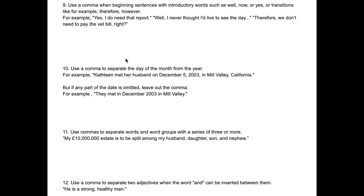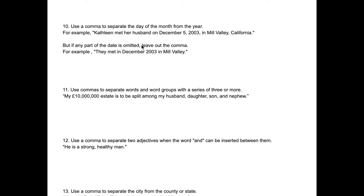Rule ten is also simple. You're going to use a comma to separate the day, the month, and the year. For example: "December 5th, 2003," and then continue on with the sentence. Remember: you never start a sentence with a number — if you do, write it out in letter form. You can omit commas around the date if you don't have the full date; for example, "December 2003" doesn't need a comma because there's no day.